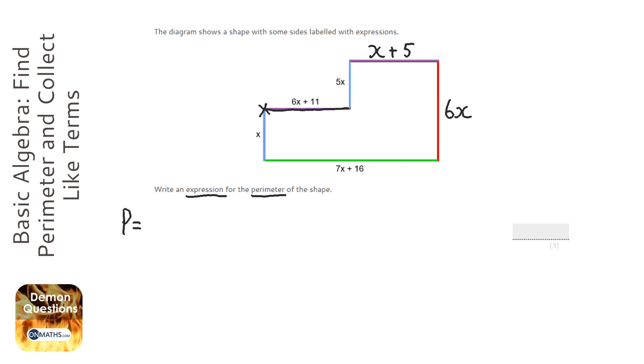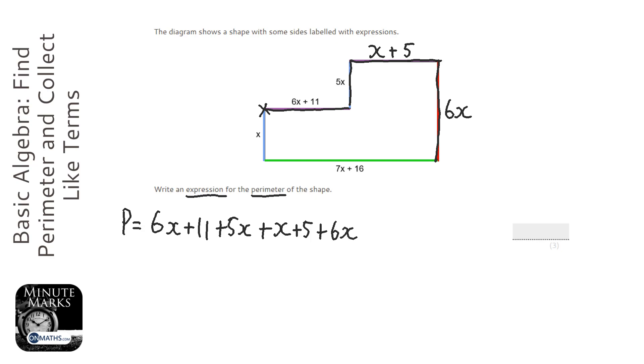So perimeter equals 6x plus 11 plus 5x plus x plus 5 plus 6x plus 7x plus 16 plus x.